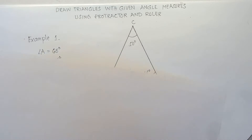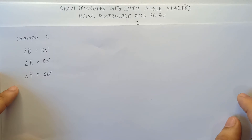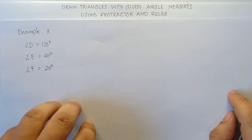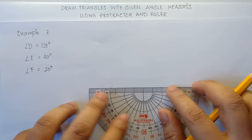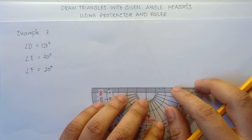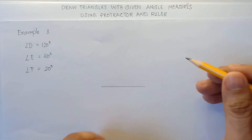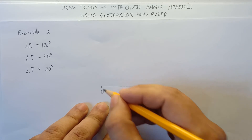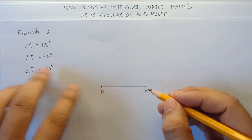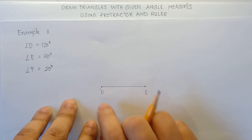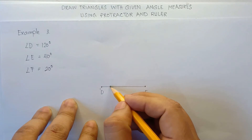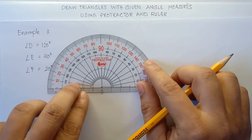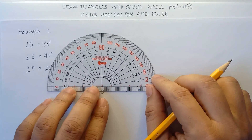What if we have an obtuse angle? We have given 120 degrees — that is an obtuse angle, greater than 90 but less than 180. Draw a horizontal line without a specific measure and label the points D and E. Angle D is 120 degrees. Align the center part of the protractor at point D, align 0 in the horizontal line, and use the inner numbers.